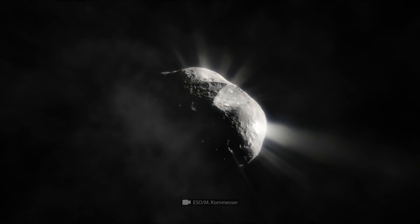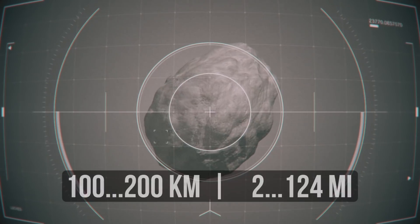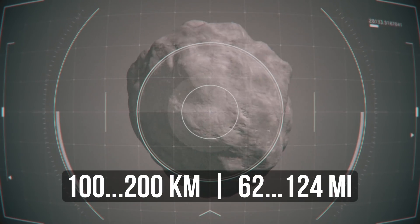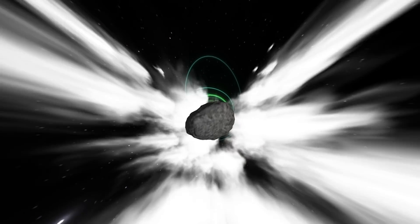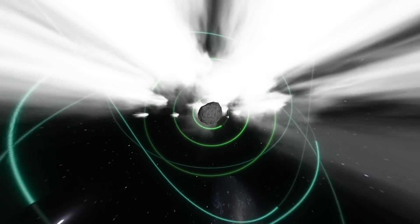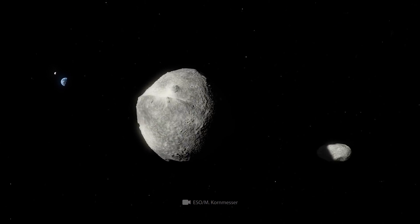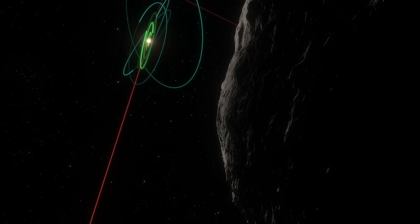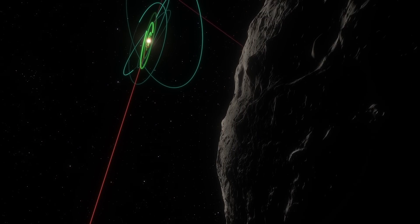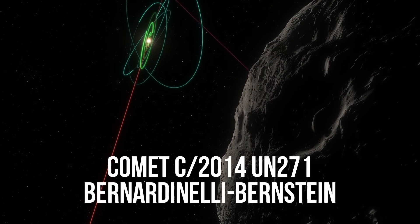A giant comet with a diameter of almost 200 kilometers is heading towards the inner solar system at extreme velocity from the outer reaches. In 10 years' time, it will fly by the Earth. In January 2031, we'll see an enormous comet named Bernardinelli-Bernstein.